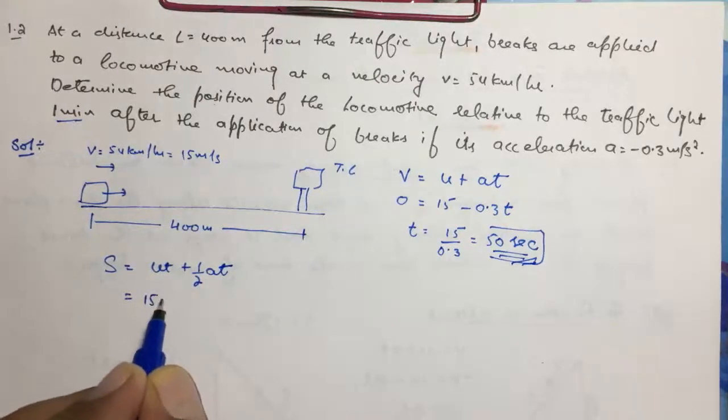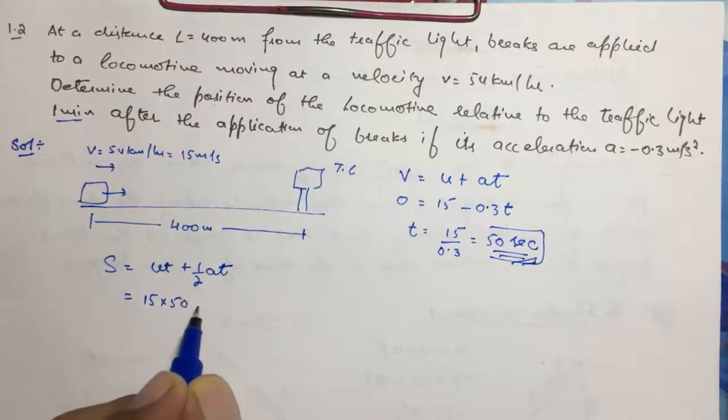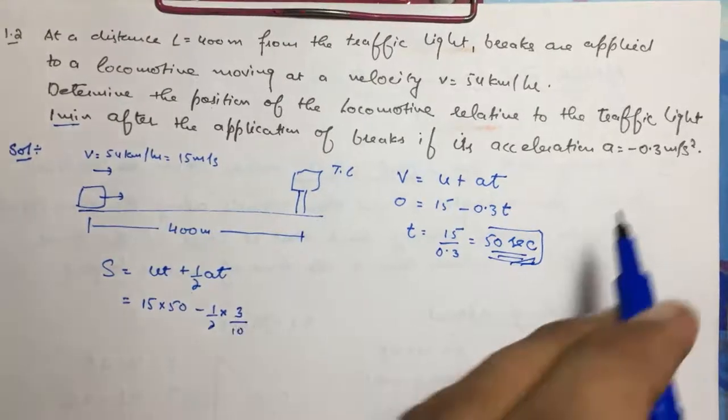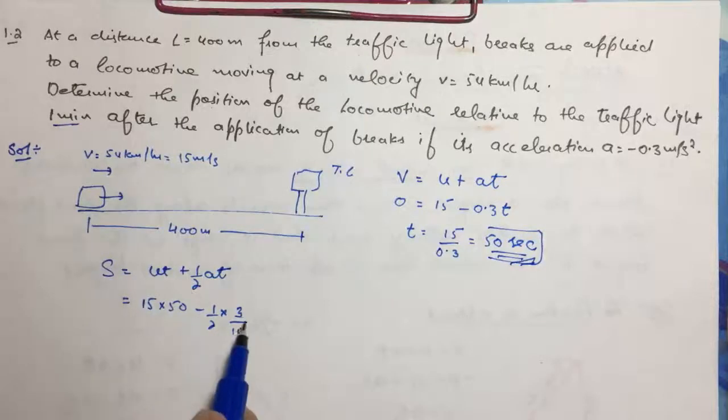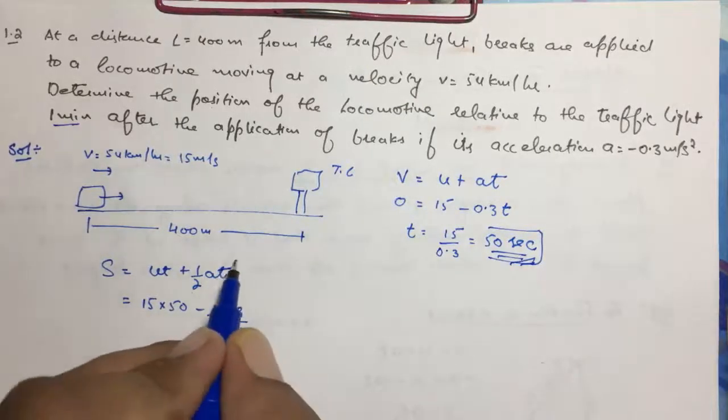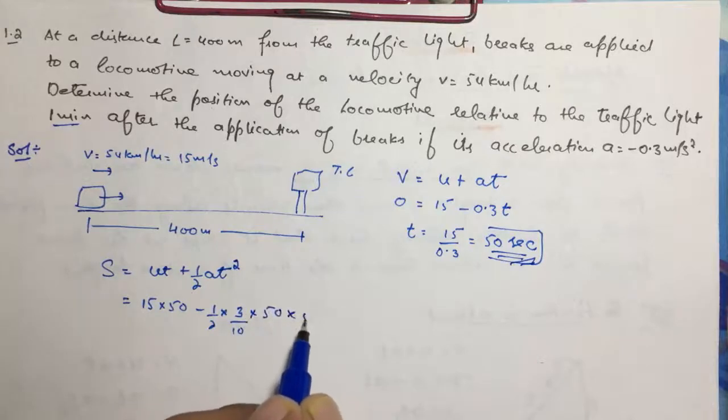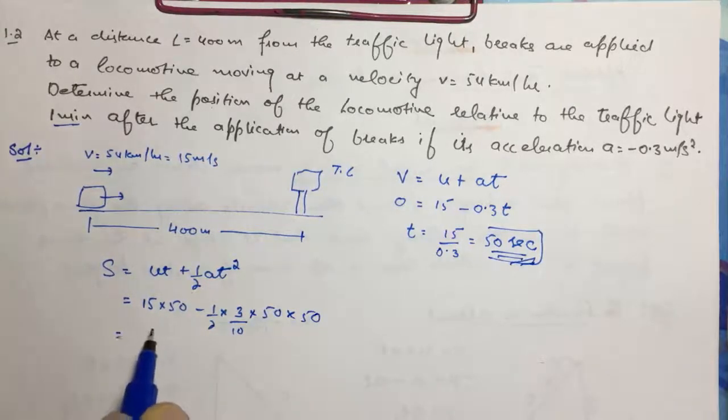Initial velocity is 15, so 15 × 50 minus ½ × 3/10 because acceleration is negative, so -0.3 into T², ½AT² into 50 × 50.